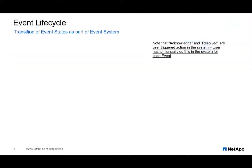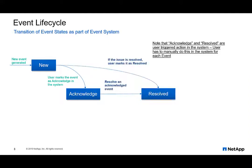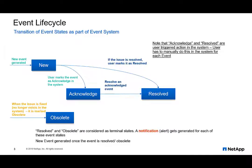To understand this better, let's understand the event lifecycle in Active IQ Unified Manager. Each new event, when triggered, is transitioned to either acknowledged or resolved based on user actions. Once the issue is fixed, the resolved event transitions to an obsolete event. So the resolved and obsolete are two terminal states where a notification is sent while the transition happens.